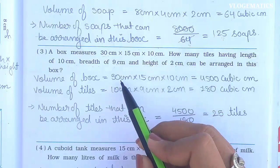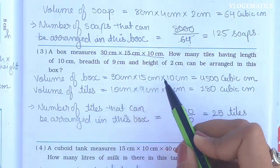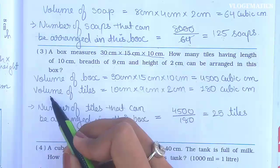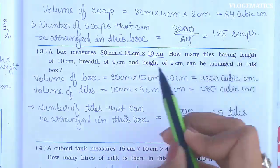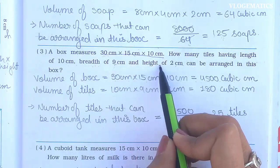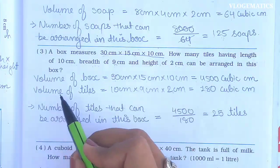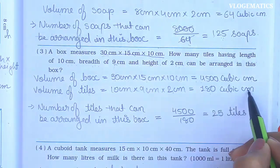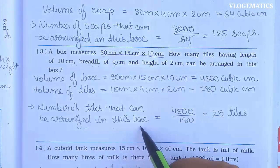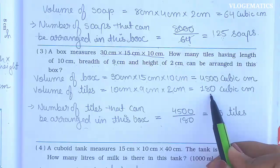Volume of box = length × breadth × height. Volume of tiles: length is 10 cm, breadth is 9 cm, height is 2 cm. So volume of tile = 10 × 9 × 2. 10 × 9 = 90, 90 × 2 = 180 cm³. Volume of tiles is 180 cm³. Volume of box is 4500 cm³.